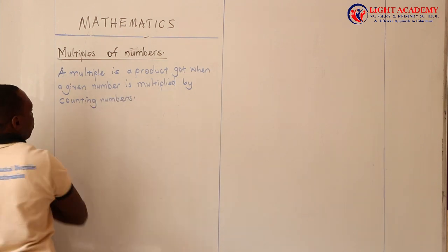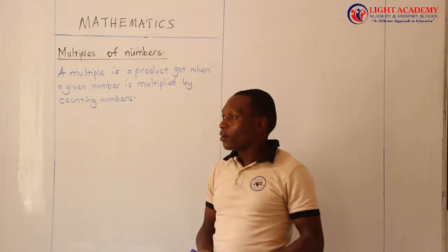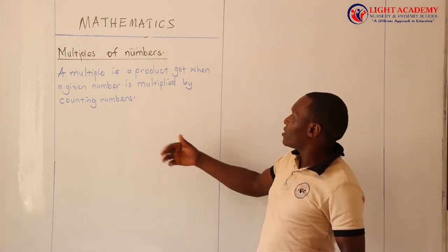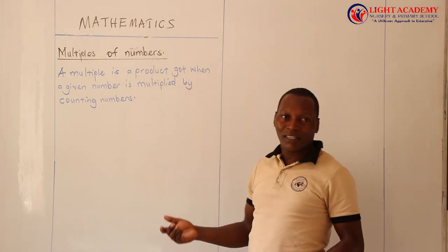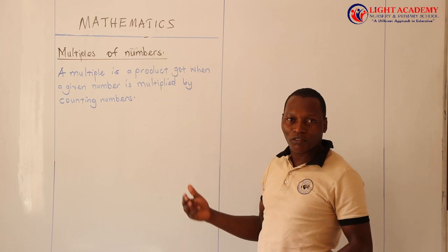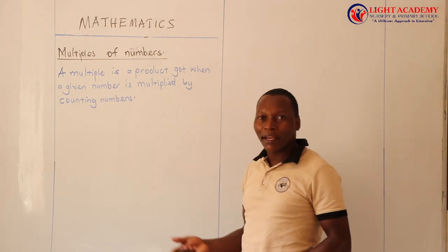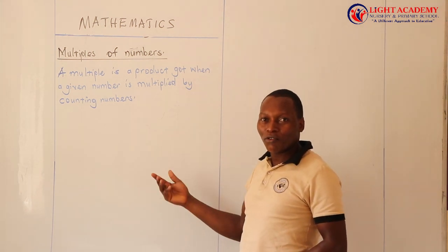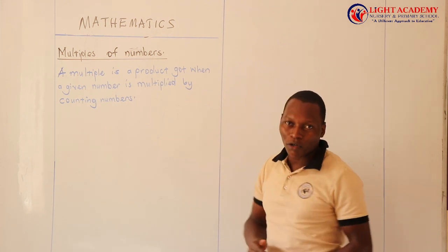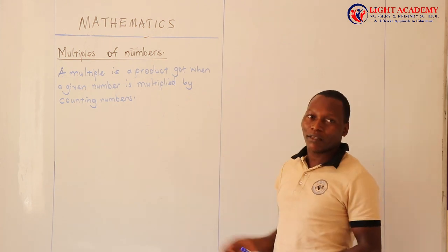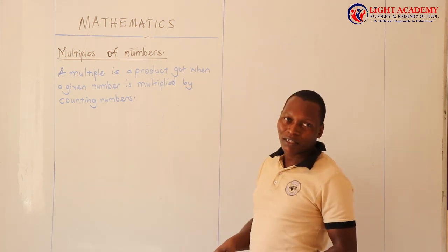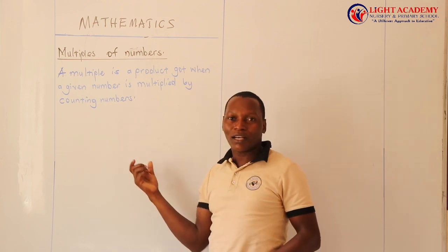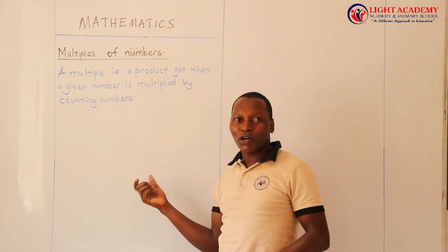I believe you still remember what we call counting numbers. These are natural numbers that we always use in counting — the likes of number 1, 2, 3, 4, 5, 6, and so on. Those are called counting numbers. The word 'multiple' is coming from multiplication.